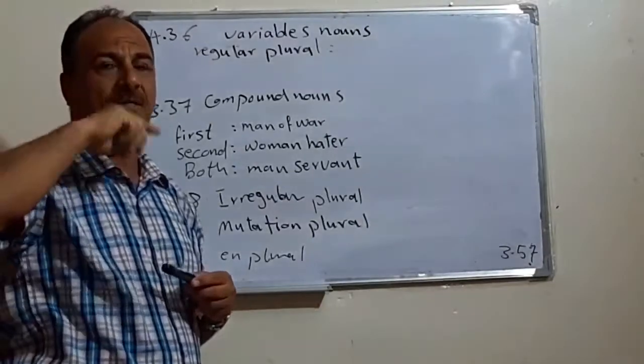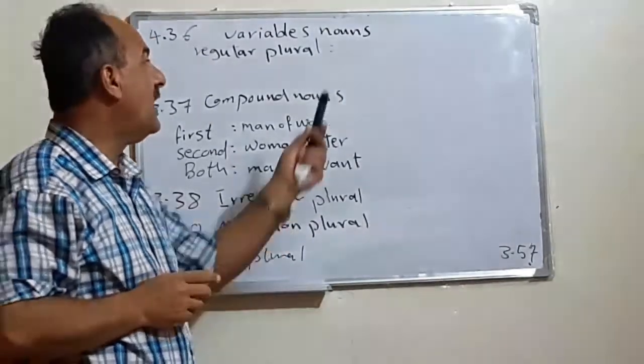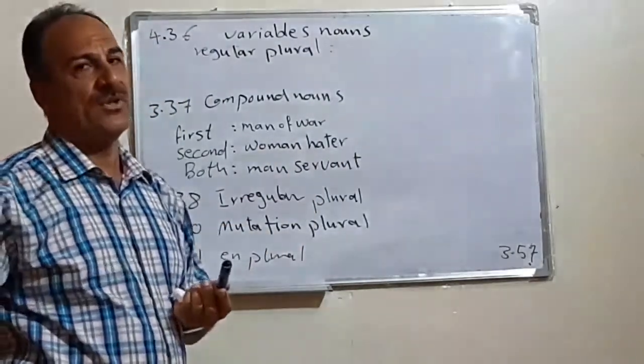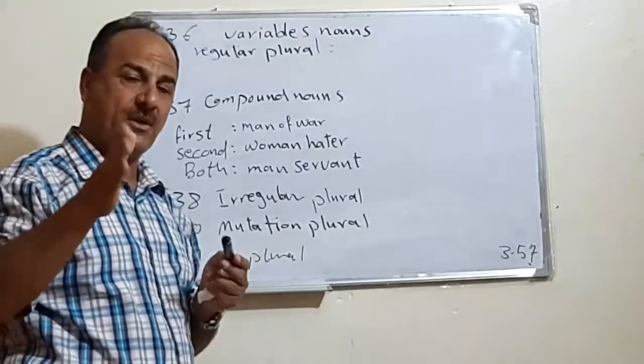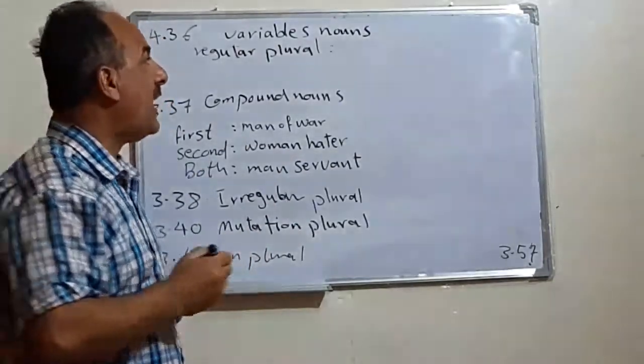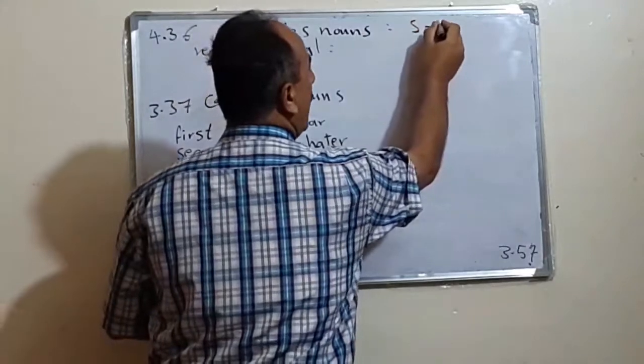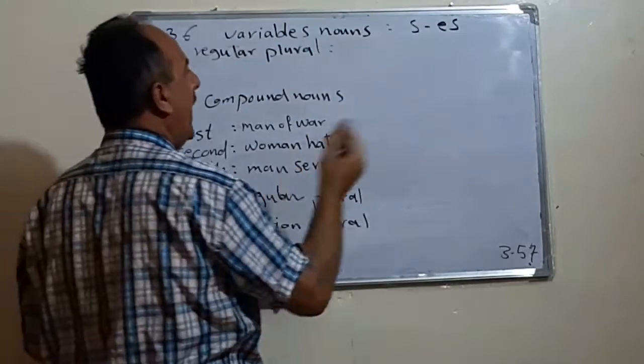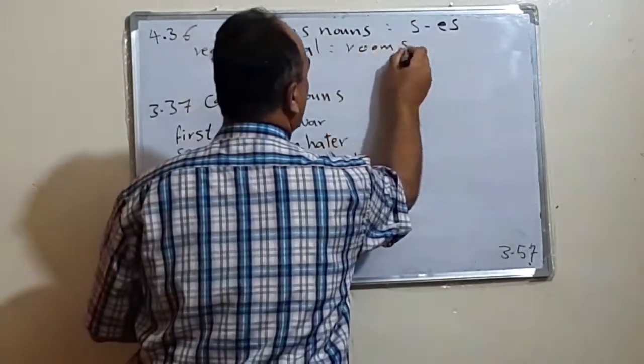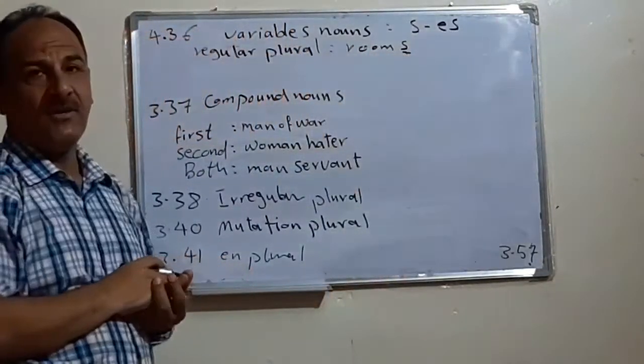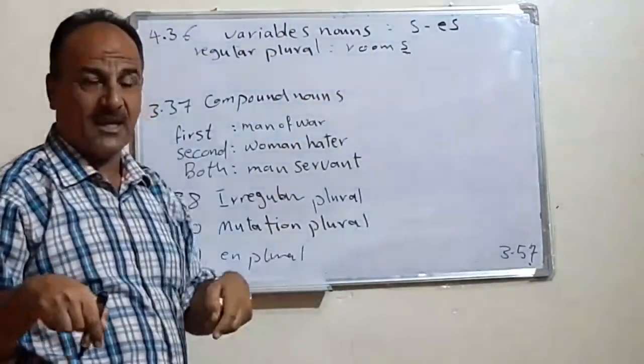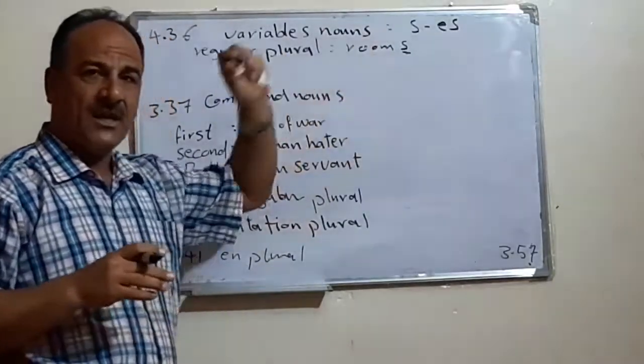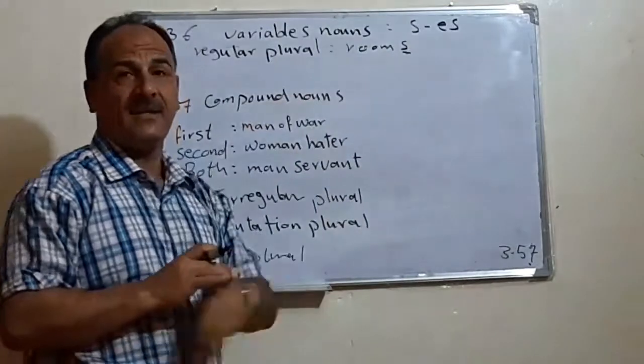In English, like in other languages like Arabic or German or Urdu, it is easy to make the noun from singular into plural by adding either S or ES. For example, if we have room, we know that we have to add S to change it from one singular room into more than one room. The house contains three rooms, for example.